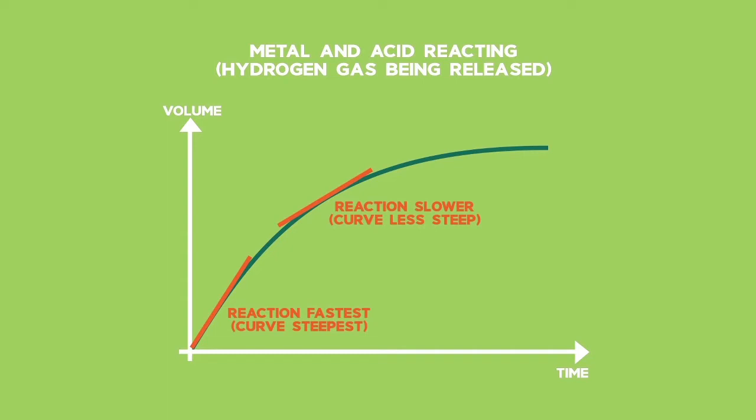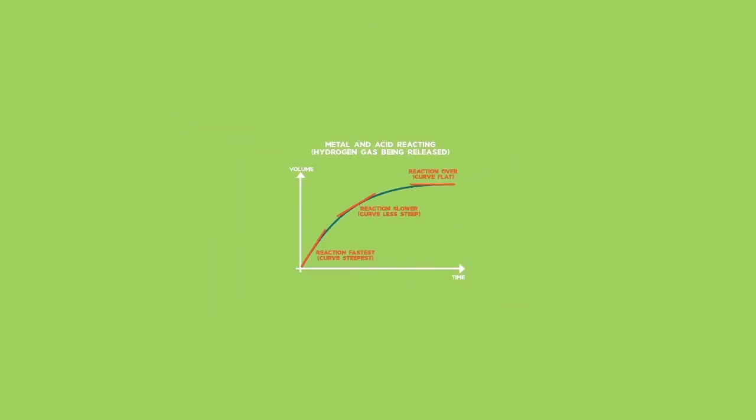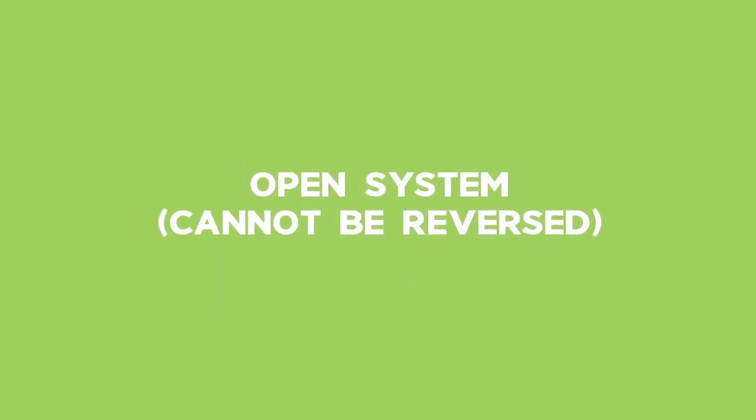When the reactants have been used up, the curve becomes flat as the reaction has run to completion, as one or more of the reactants have been used up. The system is an open system, as the reaction cannot be reversed.